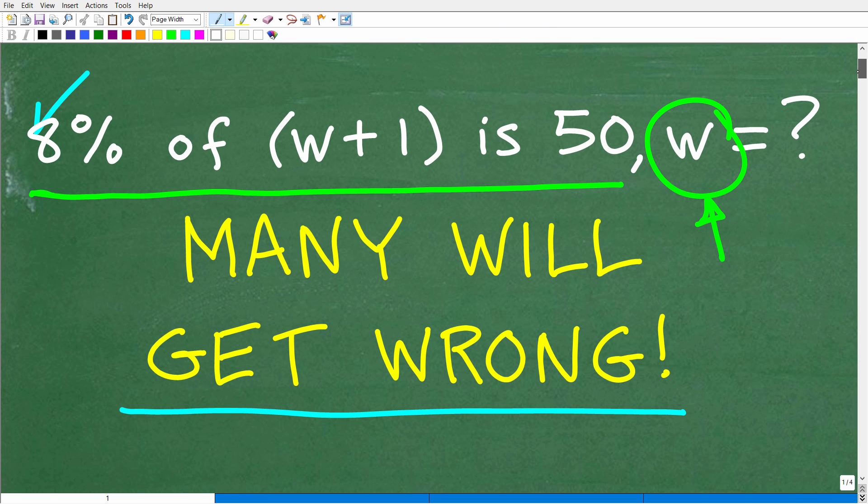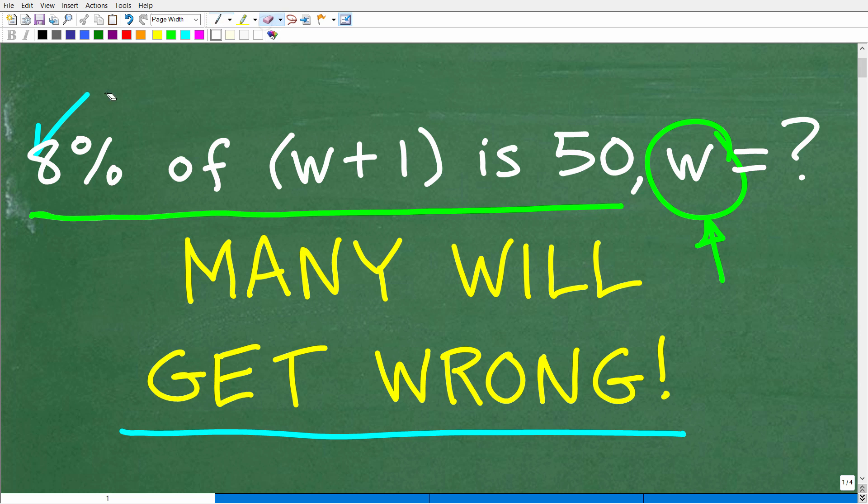Okay, so one more time here. Do not give up. Don't be afraid of this variable. Don't be like, oh no, I can't figure this out. So the question is 8% of w+1. Now, let me give you a little bit of a hint. w+1 is representing a number. It's representing some value. So 8% of some mystery number is 50. And of course, we want to know what w is. w is part of what makes up this number. So let's go ahead and take a look at the answer.